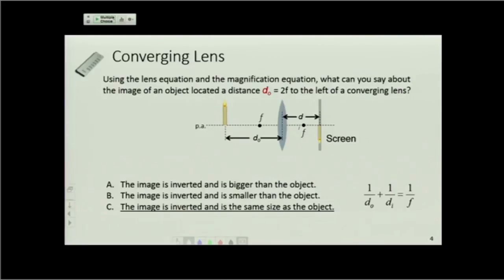1 half plus 1 half is going to give you 1, right? So dᵢ has to be 2f too. If dᵢ and d₀ are both 2f, then the magnification is going to be negative, but with magnitude 1.